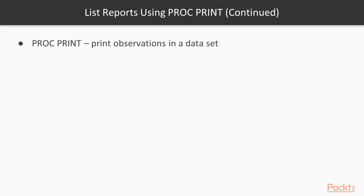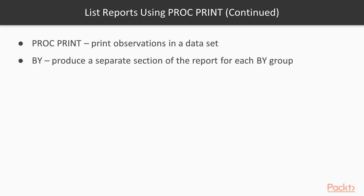Let's see what these statements mean. Proc print basically prints observations in the dataset. The by statement produces a separate section of the report for each by group. So suppose we want a report for a particular group — we specify that variable in the by group.